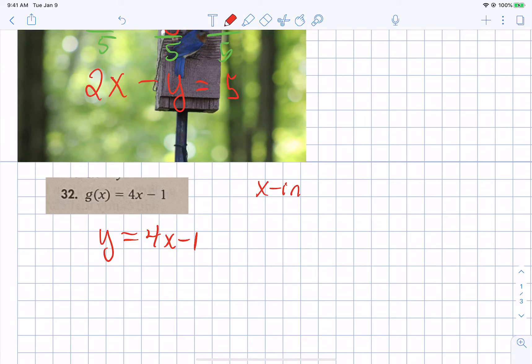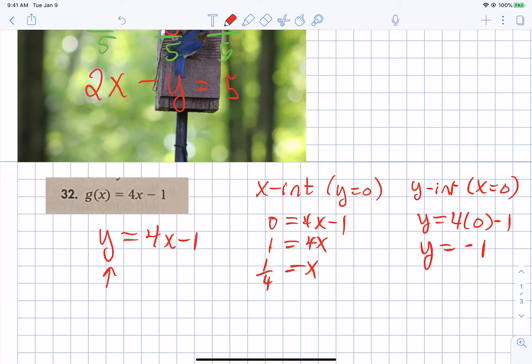Remember your x intercept, we're going to let y equals 0. Our y intercept, we're going to let x equals 0. So our x intercept, we're going to let the y equals 0 and solve for x. So add 1 to both sides. Divide by 4. So our x intercept is 1 fourth. Now let's do the y intercept. We're going to make x equal to 0. So we get y equals 4 times 0, take away 1, or y equals negative 1.